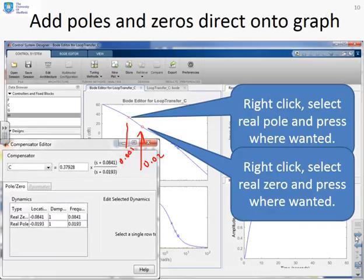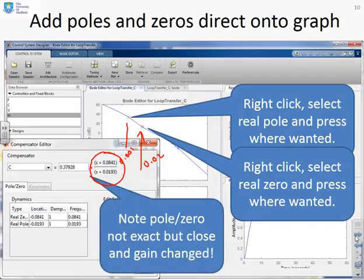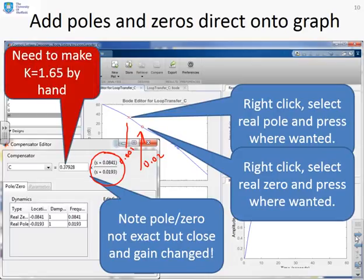Now you can see, if I open the compensator editor, because I've used the graphical placement tool, they're not exactly where I wanted them to be, but they're pretty close. The other thing you'll notice is the pole and zero are close, but the gain has been changed significantly. Remember we said SISOTOOL has this issue where it changes K without telling you. What you're going to have to do is go into this box and put your 1.65 back in.